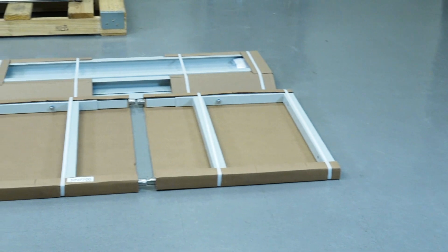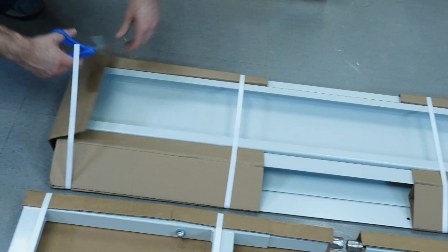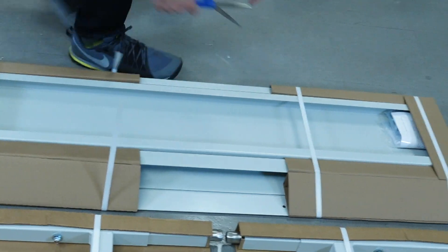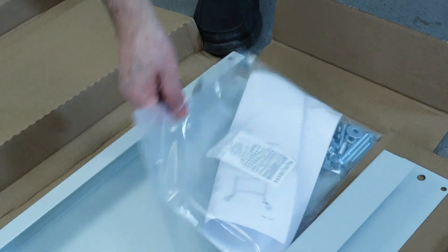Next, unpack the base stand components that were set aside during the initial unpacking. The base stand ships from LabConco at a working height of 30 inches, but it's adjustable up to a 37-inch working height in 1-inch increments.